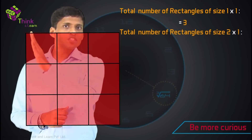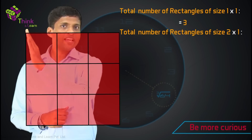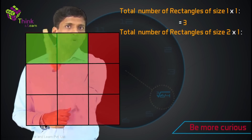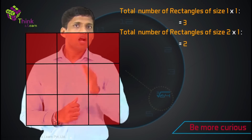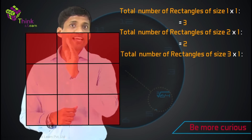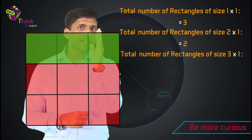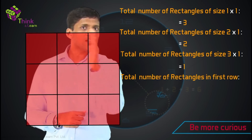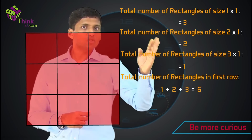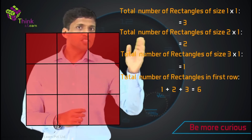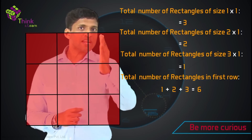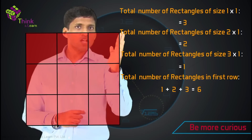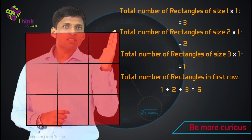Now how many rectangles are there of size 2 by 1, where length is 2 and width is 1? So 2 by 1 rectangles are 1 and 2 — so there are 2 of them. How many rectangles are there where the size is 3 by 1? It's just 1, the complete row. So there is a clear pattern — how many rectangles are there in this particular line? 1 plus 2 plus 3 which equals 6. And we know that when we add numbers like this, we get triangular numbers. So we get 6 rectangles along the first row.